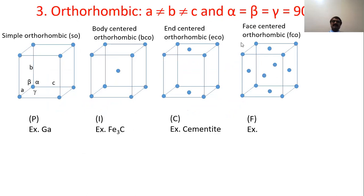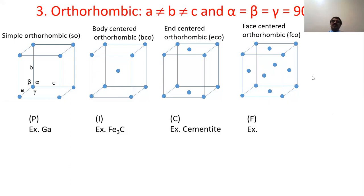Orthorhombic is characterized by A not equal to B not equal to C, with all angles equal to 90 degrees. Four types of lattices are possible: simple orthorhombic — lattice points at corners only, example gallium; body-centered orthorhombic — lattice points at corners and body center, example Fe3C; end-centered orthorhombic — lattice points at two bases in addition to corners, example cementite; and face-centered orthorhombic — lattice points at corners and centers of each face.